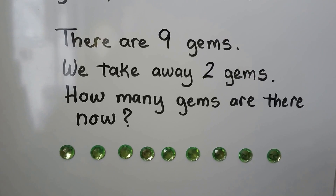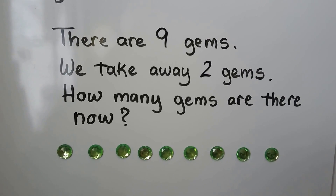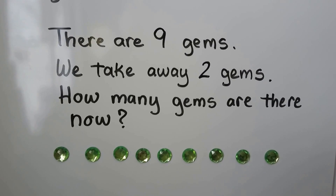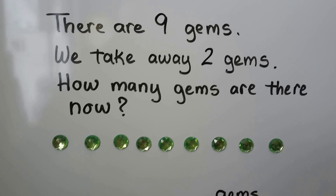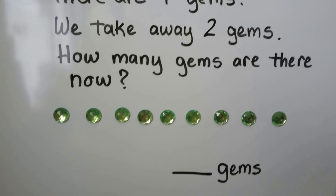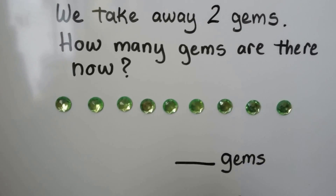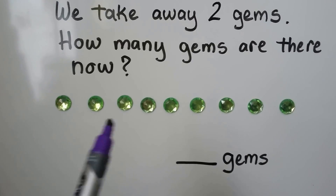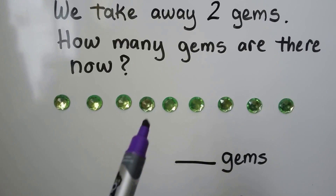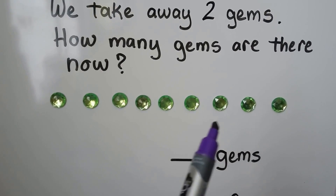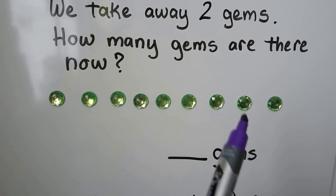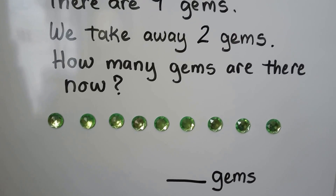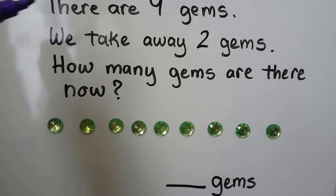There are nine gems. We take away two gems. How many gems are there? One, two, three, four, five, six, seven, eight, nine. There are nine gems.